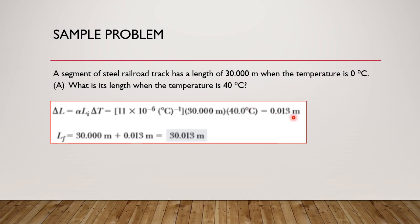The answer for delta L is 0.013 meters. The final length is the initial length plus delta L: 30 plus 0.013 equals 30.013 meters. Problems involving the coefficient of linear expansion are that straightforward — just direct substitution.